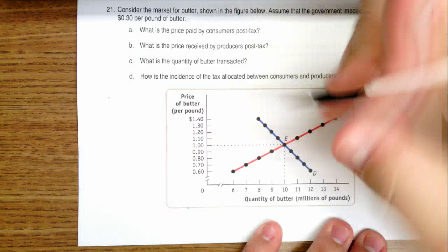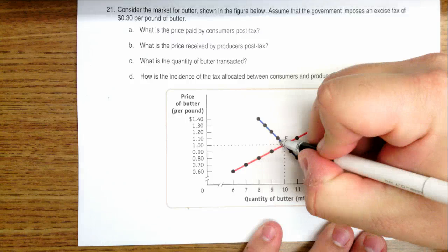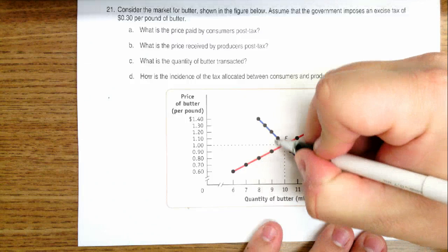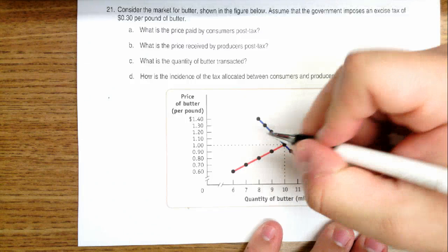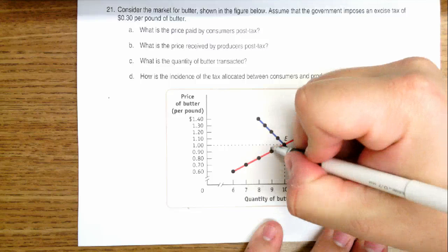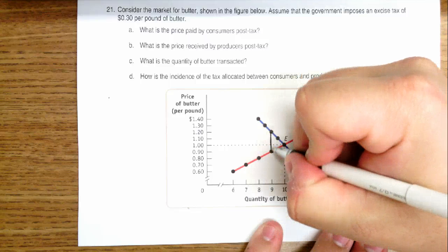Again, to find that, what we do is we start at equilibrium and we begin to look for an area where the distance between supply and demand curves is equal to the size of the tax. In this case, we find that a $0.30 gap appears right here.